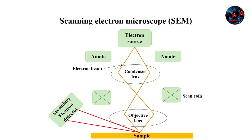The SEM scans the surface of the sample with high-energy electron beams. SEM differs from conventional light microscopes, as they use light waves to create a magnified image. In SEM, when the electron beam strikes the specimen surface, it interacts with the surface.